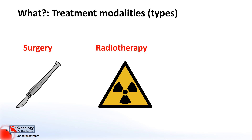Radiotherapy uses targeted radiation to kill cancer cells. It involves using high energy rays, like x-rays or electrons, to kill cancer cells. It can be given externally by a machine to direct rays at cancerous tissue, or internally by placing radioactive material in the body near cancerous cells.